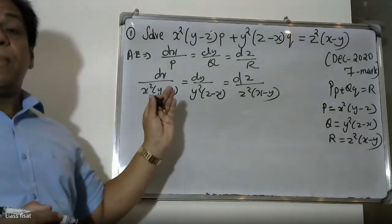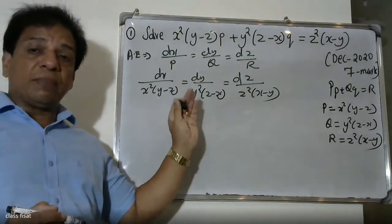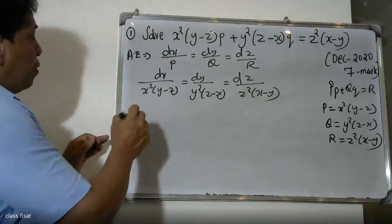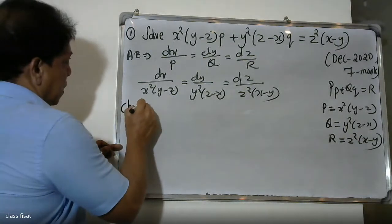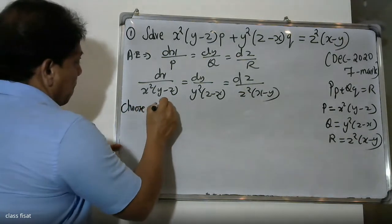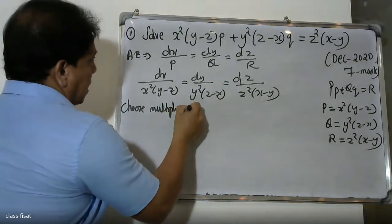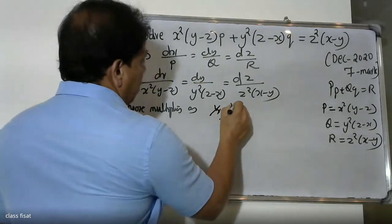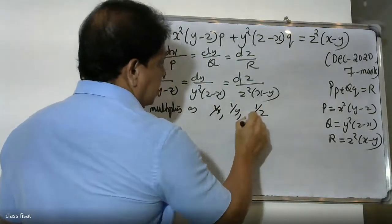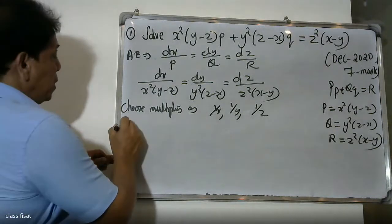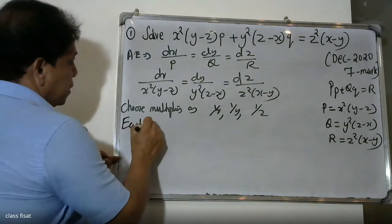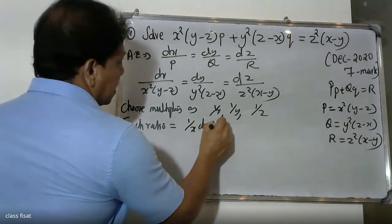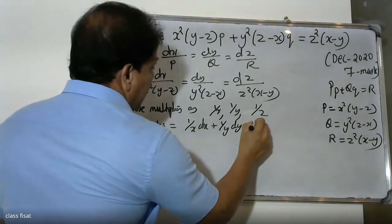We solve this using the multiplier method. We choose multipliers 1/x, 1/y, and 1/z. Each ratio is equal to (1/x)dx over the denominator, (1/y)dy, and (1/z)dz respectively. So each ratio equals (1/x)dx, (1/y)dy, and (1/z)dz.